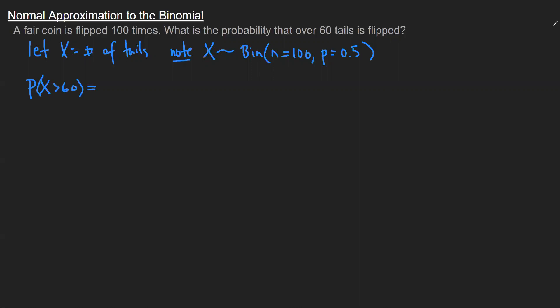Now, the problem we're going to run into is that there are a lot of outcomes. There is 61, 62, and you would do this until you get to 100. And that's a lot of calculations. While we do have a binomial formula, we'd have to use it 40 times here.